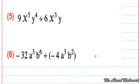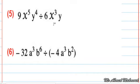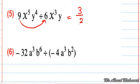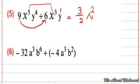Next: 9 divided by 6 equals 3 over 2. It is acceptable to have a fraction in the answer. Then x power 5 minus x power 3 equals x to the power of 2, and y to the power of 4 minus y to the power of 1 equals y to the power of 3. The final answer is 3 over 2, x power 2, y to the power of 3.